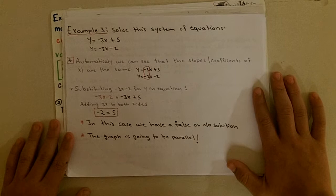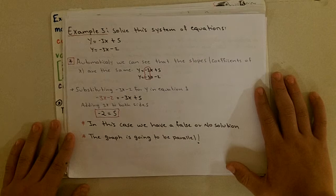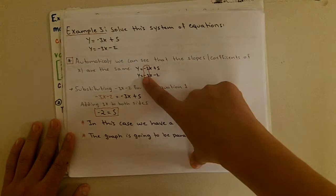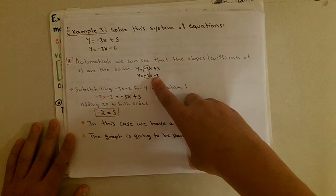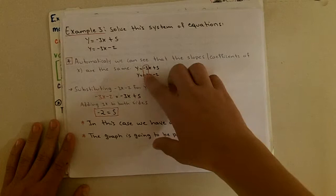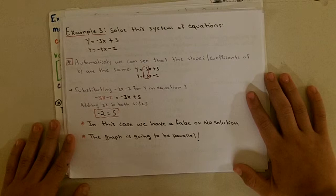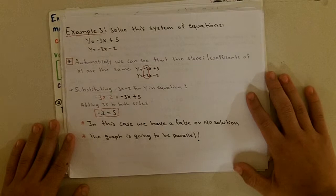Solving the system y equals negative 3x plus 5 and y equals negative 3x minus 2: right off the bat, you can see the lines are going to be parallel because the slopes are the same but the y-intercepts are different. Substituting negative 3x minus 2 for y gives negative 2 equals 5, which is a false solution, meaning there's no solution and the lines are parallel.